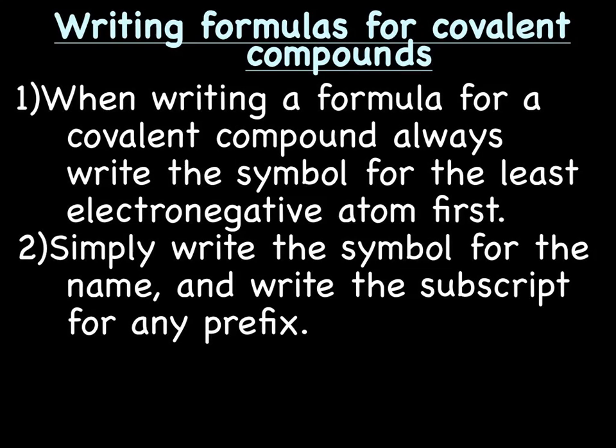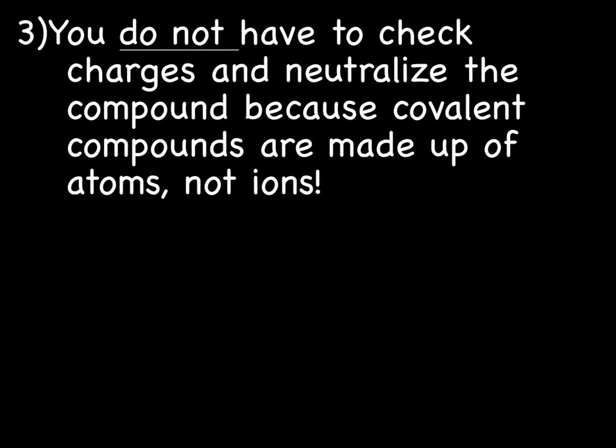Writing formulas for covalent compounds. You're going to love this. This is easy, easy, easy. Way easier than ionic compounds. So when writing a formula for a covalent compound, always write the symbol for the least electronegative atom first. All you have to do here is write the symbol for the name, and then use the prefix for the subscript. You use whatever prefix is there. Pretty much no thinking involved. It's really easy. You do not have to check charges and neutralize the compounds, because covalent compounds are made up of atoms, not ions. There aren't any charges, no stealing of electrons.